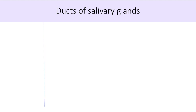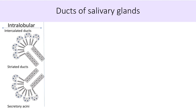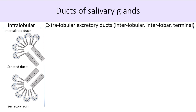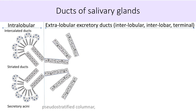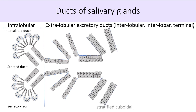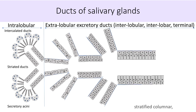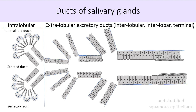The secretory acini, intercalated ducts, and striated ducts are all intralobular structures. From these intralobular ducts, the salivary gland secretion is drained by a series of extralobular excretory ducts of increasing size. Based on their location, these are labeled as interlobular, interlobar, and terminal ducts. They are progressively lined by pseudostratified columnar, stratified cuboidal, stratified columnar, and lastly stratified squamous epithelium close to the opening into the oral cavity.